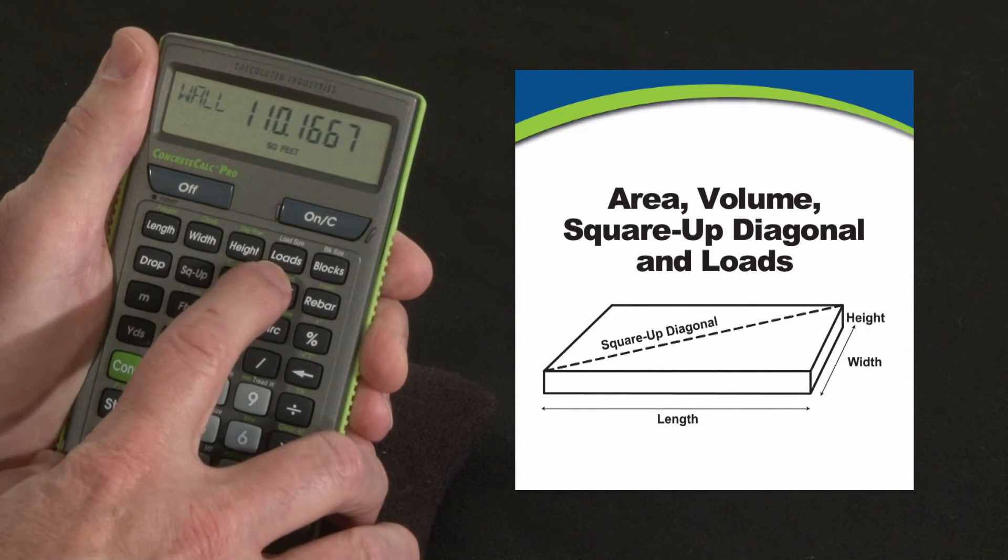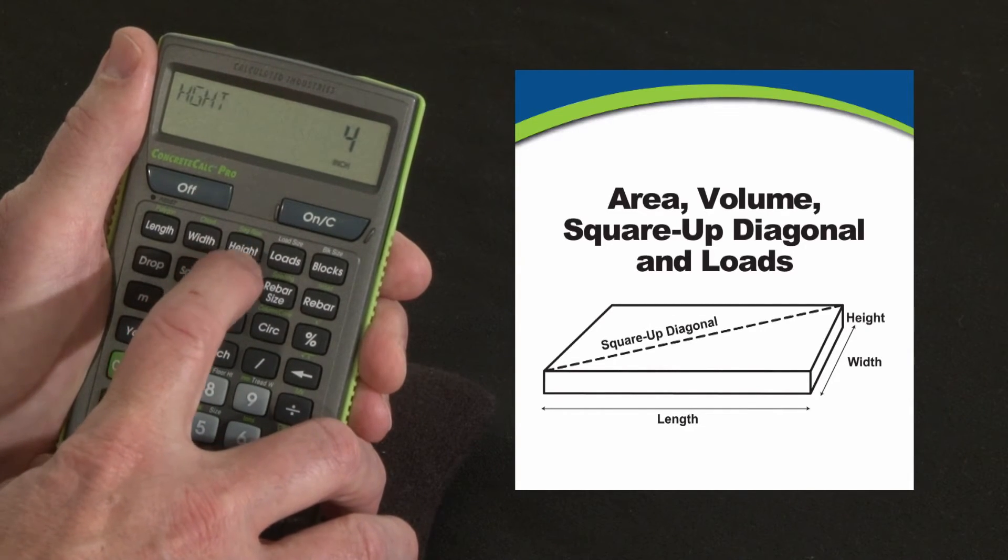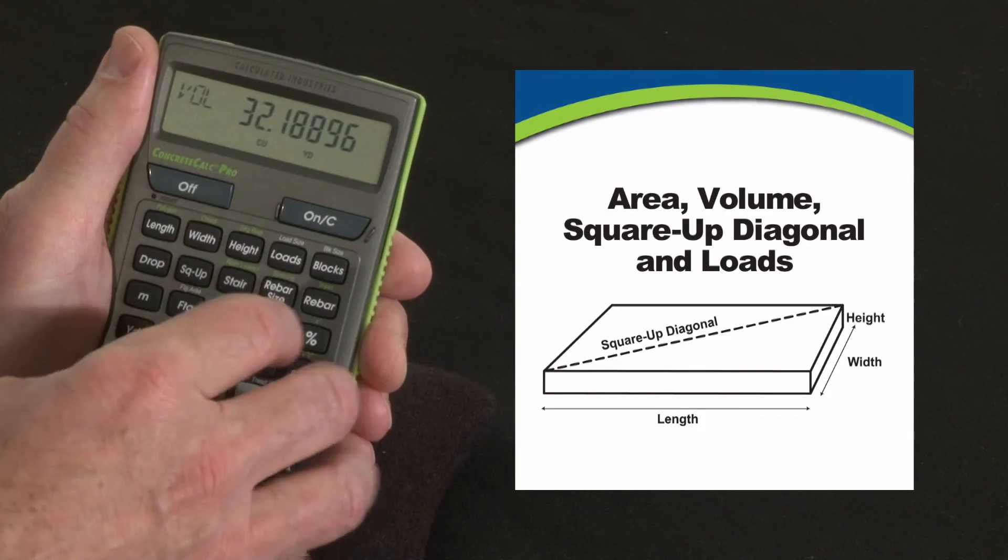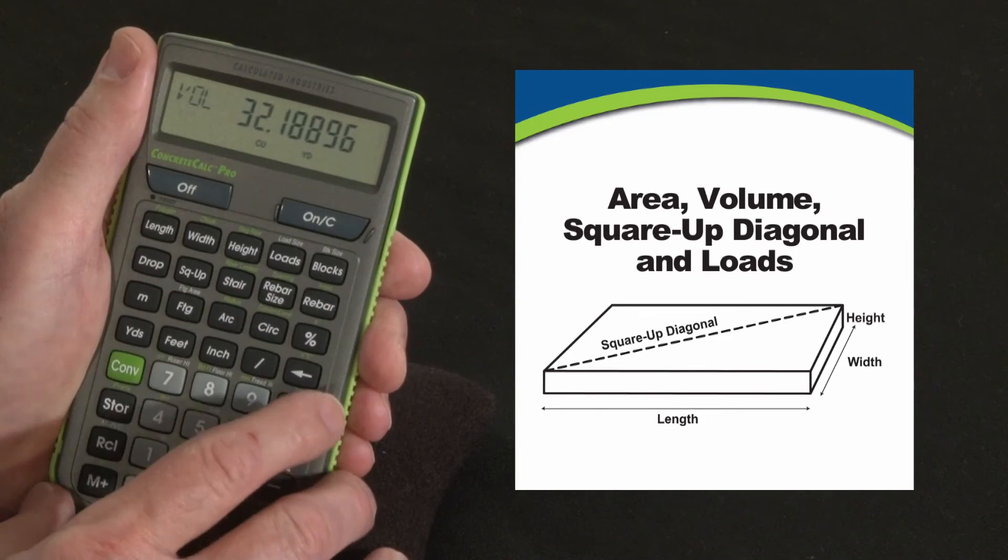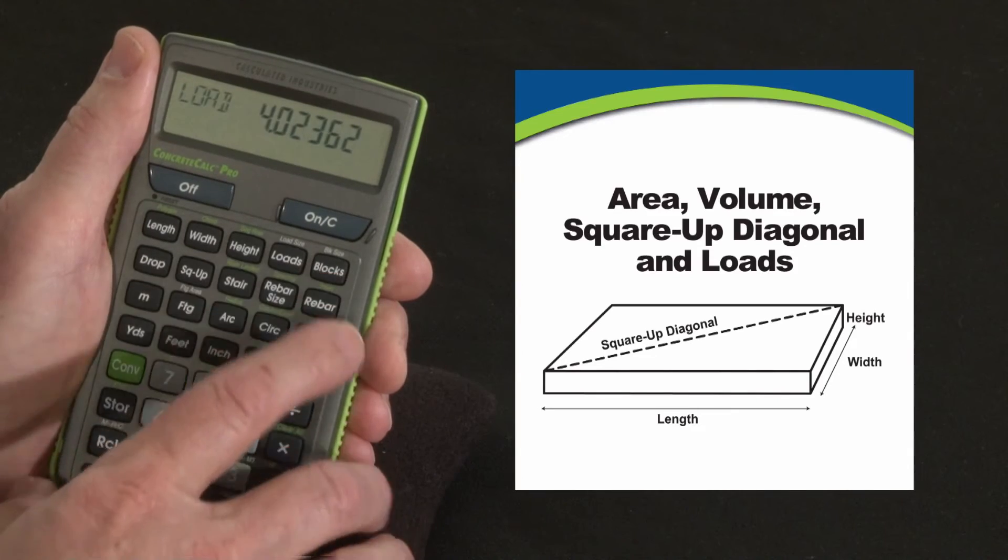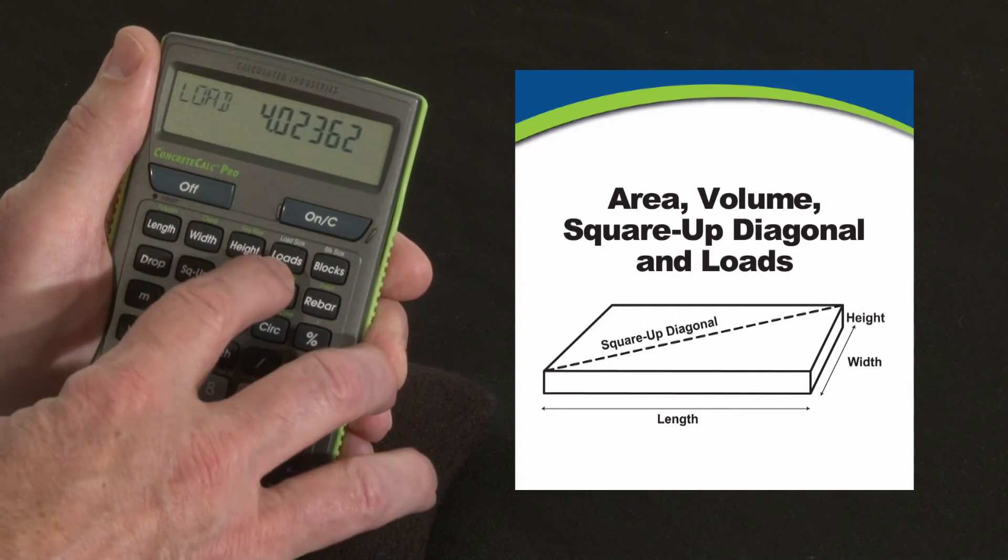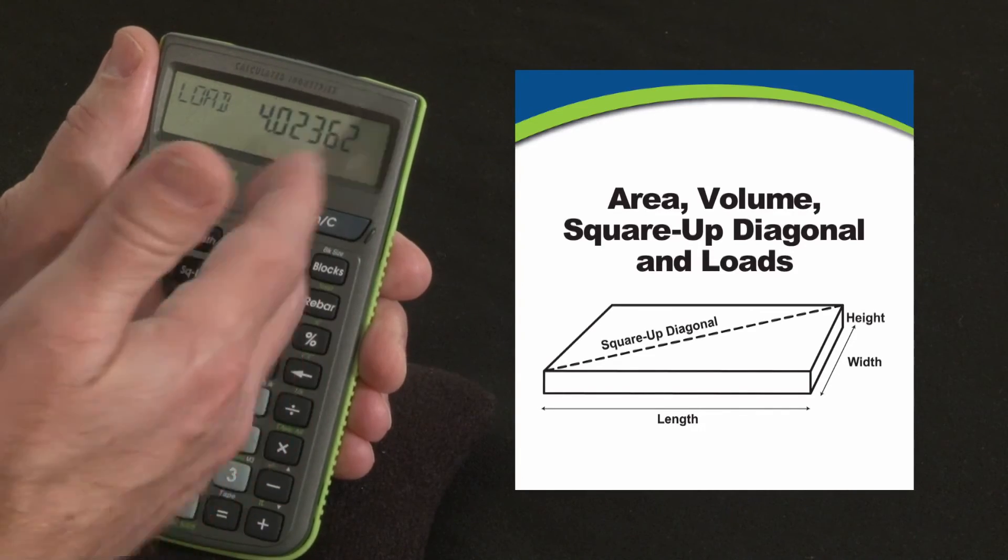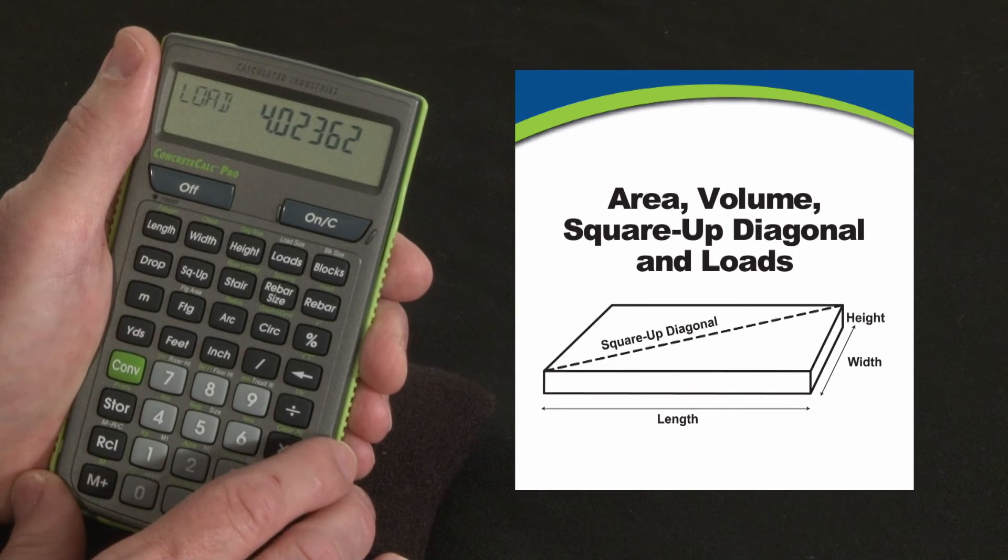Now there's also a loads key. If I go back to the volume value there, you can see that we can just recycle through the values. I can also press the loads key, that just auto divides it by the default value of 8 cubic yards, but if you've got different size trucks, you can do that, and it'll basically tell you how many loads you're going to need.